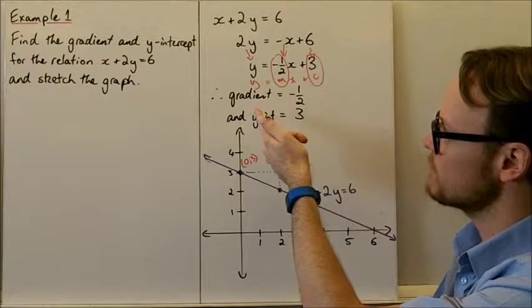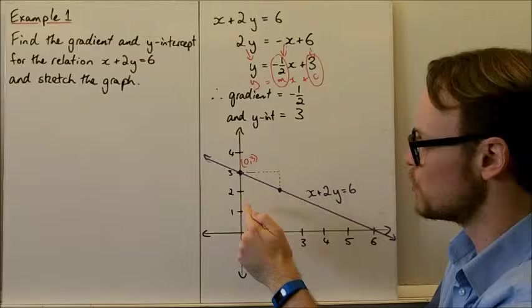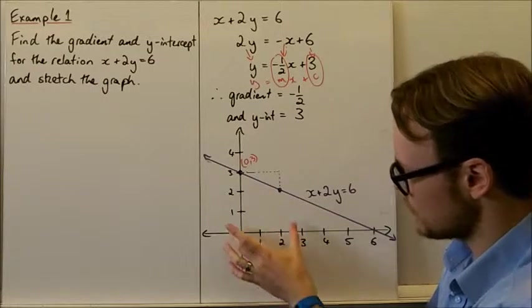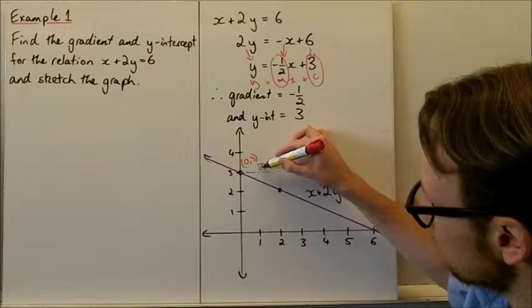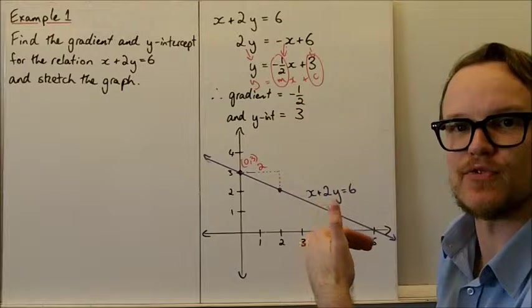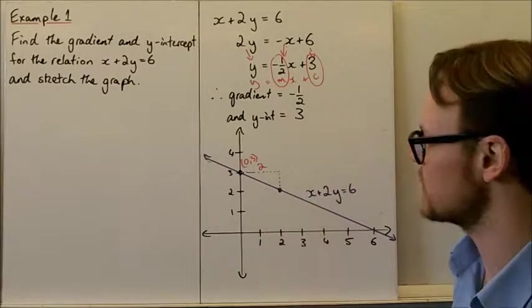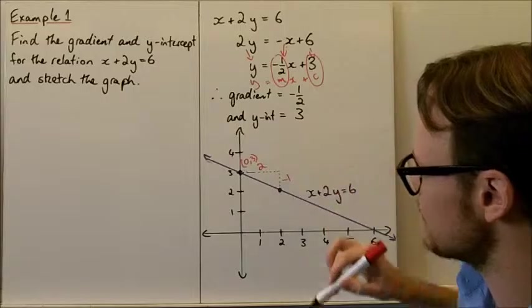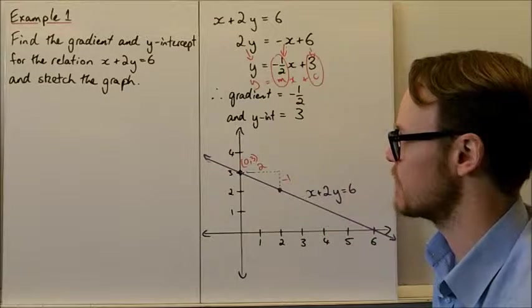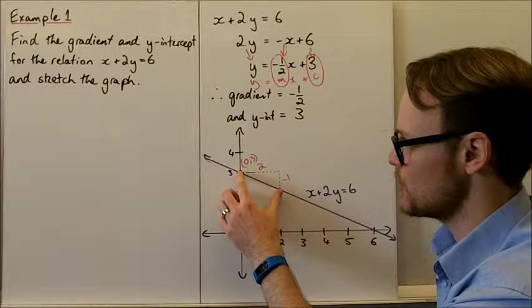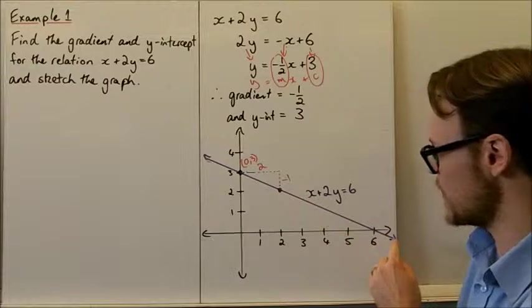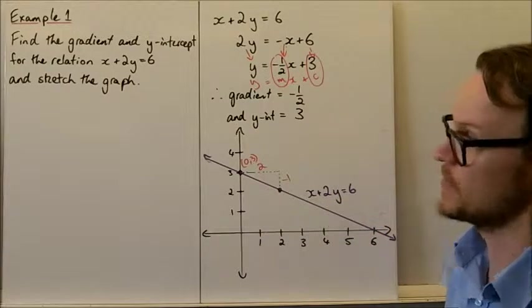and then we use our gradient. Our gradient is rise over run, so our run is 2 along, and our rise is negative 1, so we drop down by 1. So I've got those two points now, I can join them with a straight line, label my line, and I'm done.